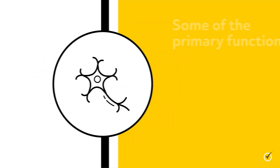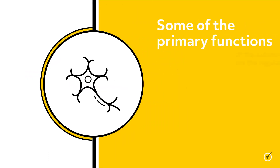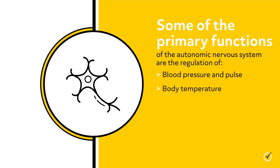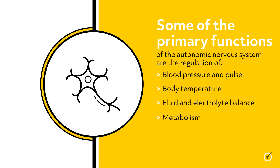Some of the primary functions of the autonomic nervous system are the regulation of blood pressure and pulse, body temperature, fluid and electrolyte balance, metabolism, reproduction, and digestion.